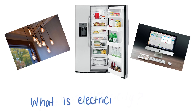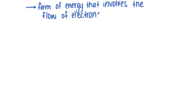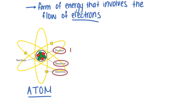So what is electricity? Electricity is a form of energy that involves the flow of electrons. Remember that everything around us is made of atoms, and atoms have protons that are positively charged, electrons that are negatively charged, and neutrons that are neutral. The electrons revolve around the nucleus, which is made of the protons and the neutrons.